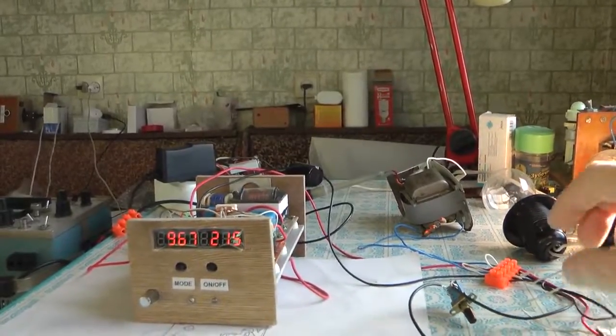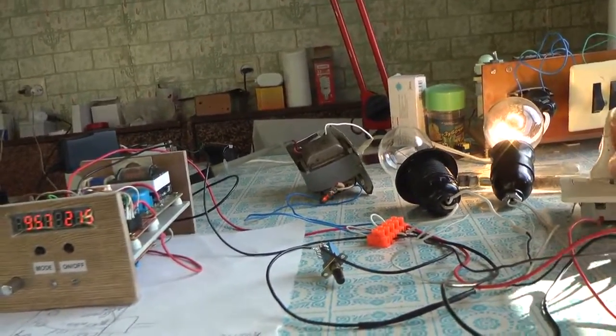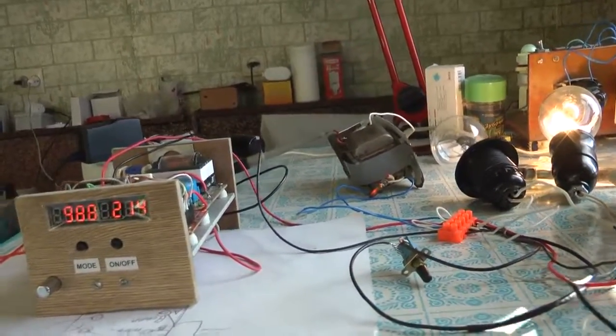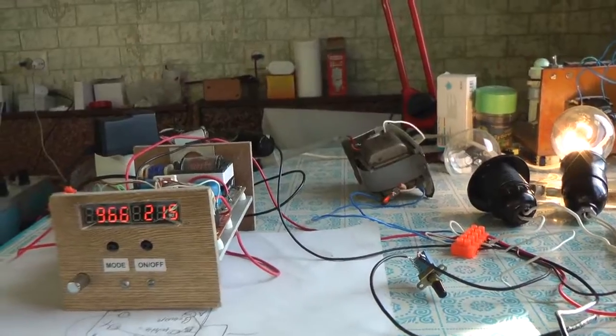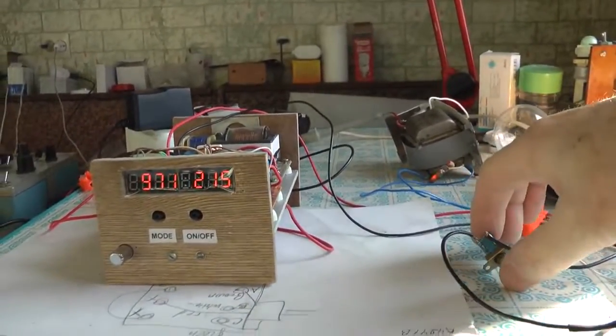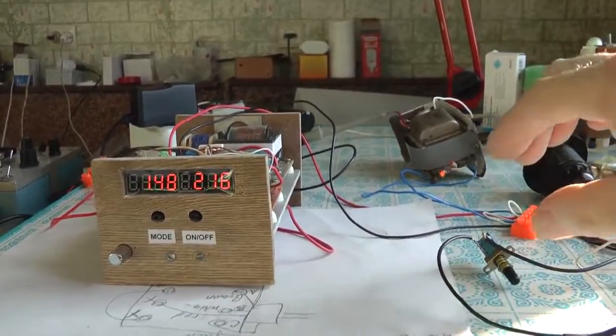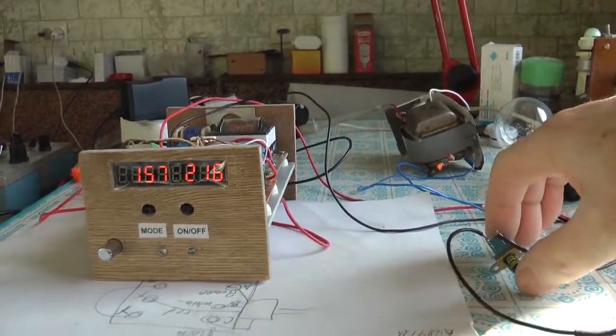So now we will switch all the load off one by one and you see the output voltage still keeps to 215. So we switch off all the loads. Output voltage is 216 to 215.